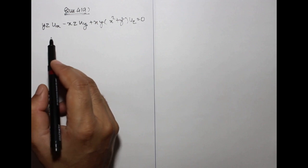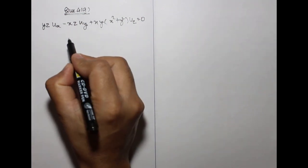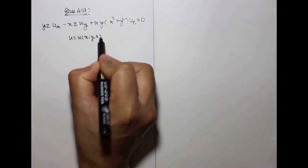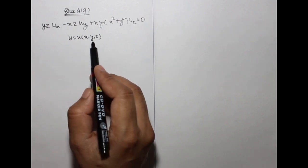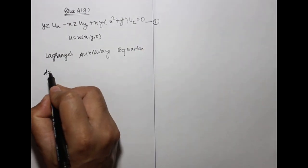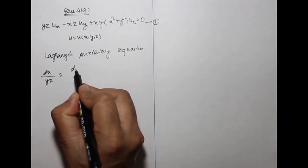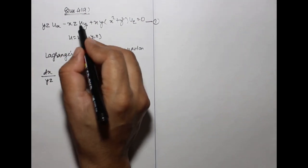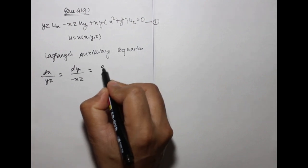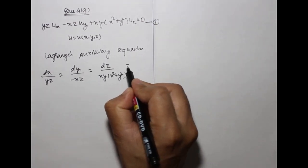This is question 4, part a: find the general solution of the partial differential equation. U is the dependent variable and X, Y, Z are the independent variables, so U can be written as U(X, Y, Z). We know the Lagrange auxiliary equation: dx upon YZ equals dy upon minus XZ, dz upon XY(X²+Y²), equal to du.